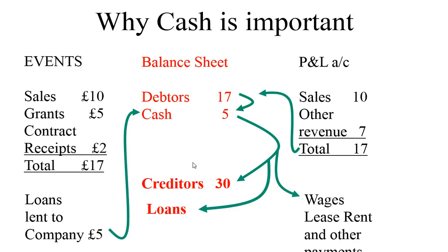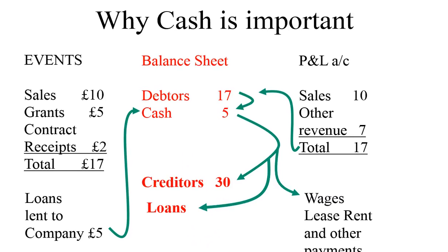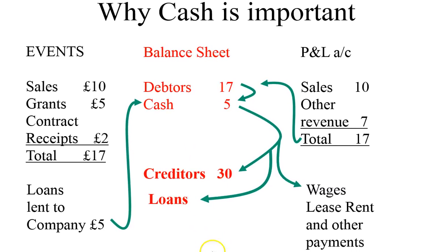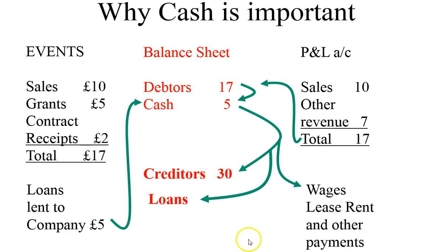Then there are the other payments that are made — wages, lease, rent, and other payments that would appear on the profit and loss account.